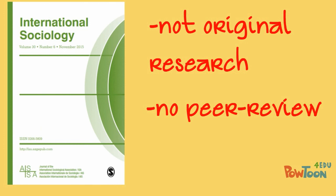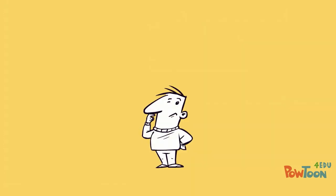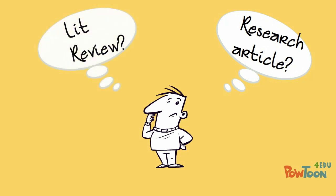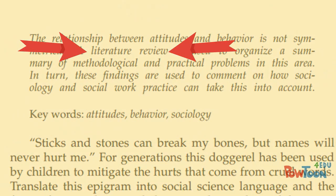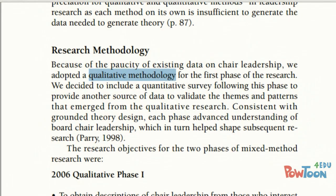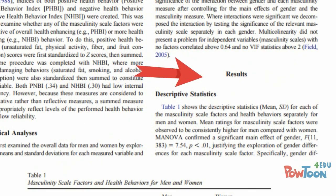At first, Jacob sometimes had difficulty determining which type of article he had found. However, he learned to carefully read the abstract for the article, as this often described what type of article it was. He also realized that research articles often have a specific format, with clearly labeled sections, such as a method section, a result section, and a discussion section.